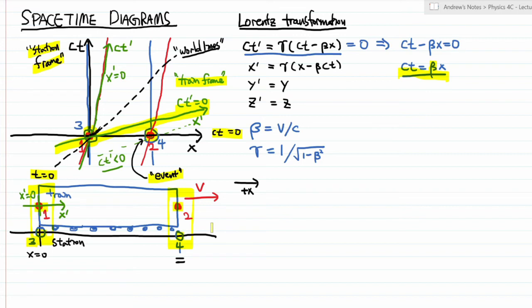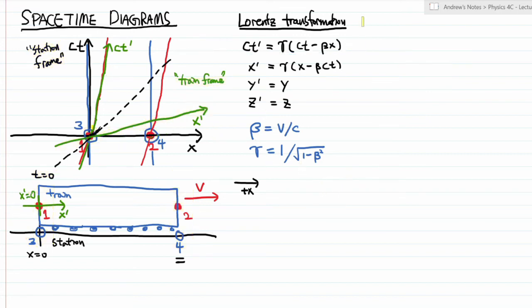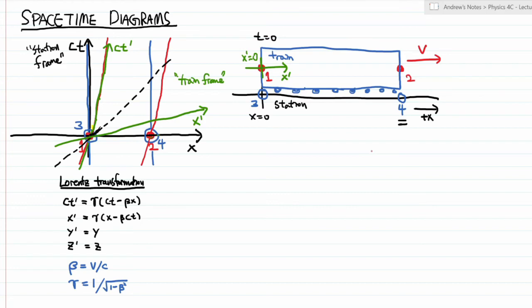Let me wrap up with two more examples. This first example is the same situation we used to introduce the relativity of simultaneity. Let's say we have a light bulb placed in the middle of the train, and we pick a moment — let's say t equals 0 — for this light bulb to go off. The light propagates in all directions at speed c. We gave a description of that before without use of a spacetime diagram, so this time let's give that description using the spacetime diagram. This is the spacetime event where the light bulb goes off.